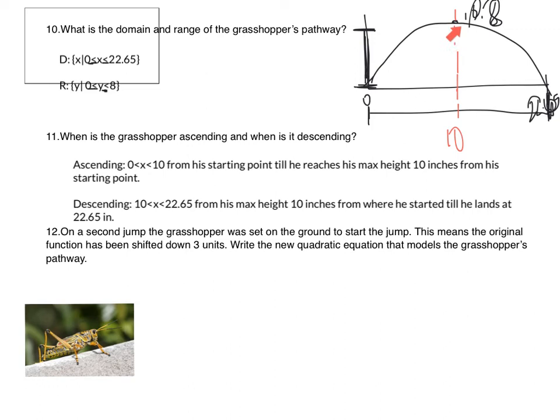So ascending from 0 to 10 and descending from 10 to 22.65 — those are the x values in which his height is ascending and descending. It's important to use an interval notation rather than just an inequality here because the jump is not continuous beyond those bounds.